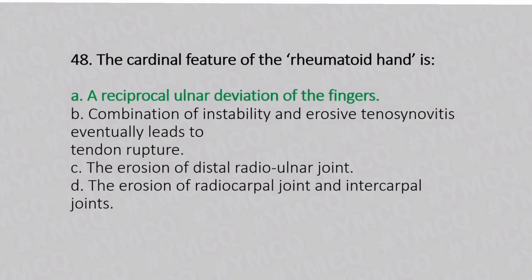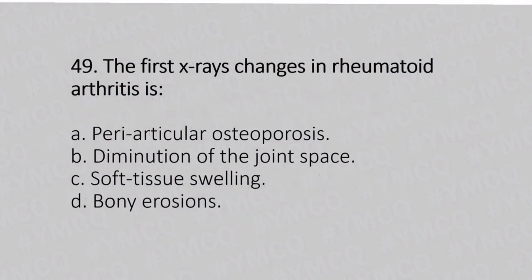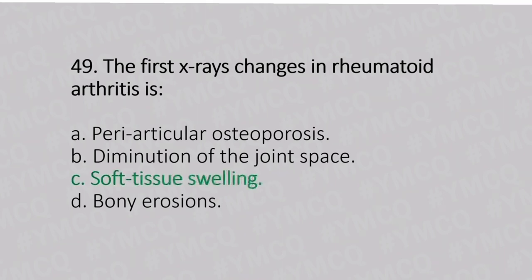Now let's move to question number 49. The X-ray changes in rheumatoid arthritis. Option A: periarticular osteoporosis. Option B: diminution of the joint space. Option C: soft tissue swelling. Option D: bony erosion. And the answer is Option C, soft tissue swelling.